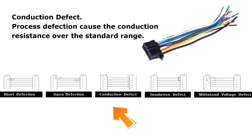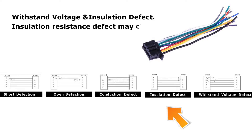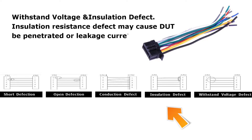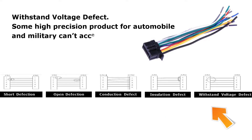Process defects can cause conduction resistance to exceed the standard range. Withstand voltage and insulation defects — such as insulation resistance defects — may cause the DUT to be penetrated or cause leakage current under high voltage. Some high-precision products for automotive and military applications cannot accept any arc under high voltage.